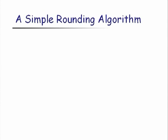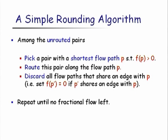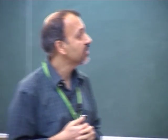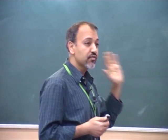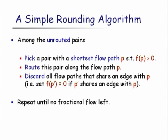As a warm-up, let's look at a simple rounding algorithm for this relaxation. It's an iterative process: start with the fractional solution, then among all unrouted pairs, pick the pair SiTi which has the shortest flow path on which the LP routes some flow. Route that pair along this path P. Discard any other flow path that intersects path P. Repeat until no fractional flow remains. The result is clearly an edge-disjoint routing.